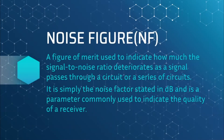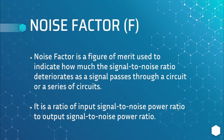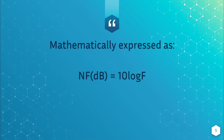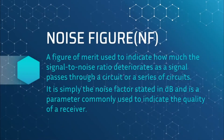Noise figure is the same as noise factor — it is a figure of merit used to indicate how much the signal-to-noise ratio deteriorates as a signal passes through a circuit or series of circuits. The difference is that the noise figure is stated in decibels. Its symbol is NF, while noise factor uses F. It is mathematically expressed as NF(dB) = 10 log F.